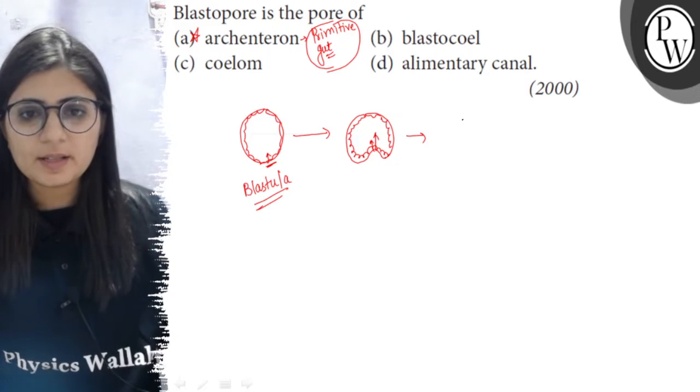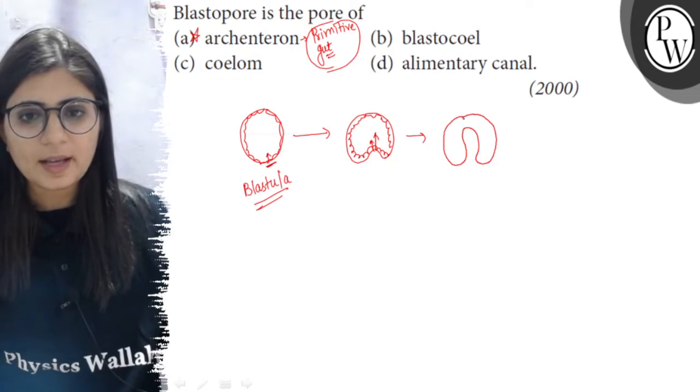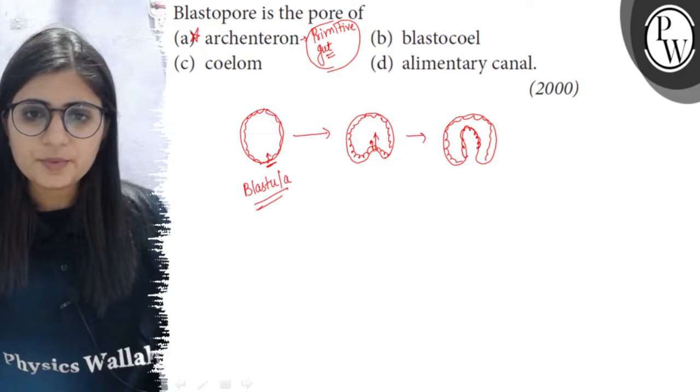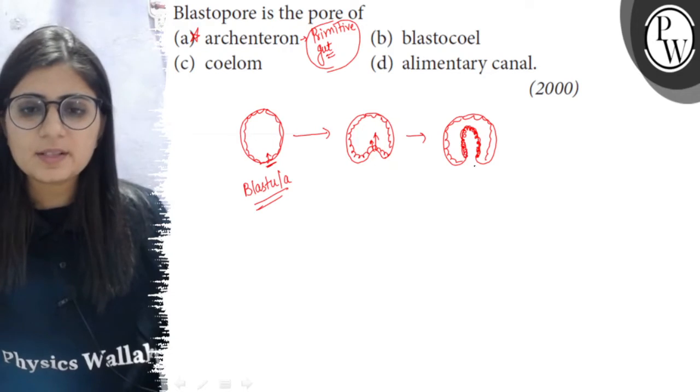The cells will move towards the inner side, so this will form a structure like this. This structure is lined with the endoderm. These are the cells which are destined to form the endoderm and there is created a pore.